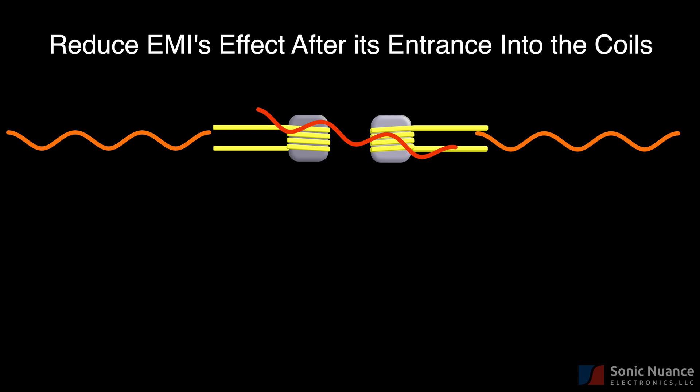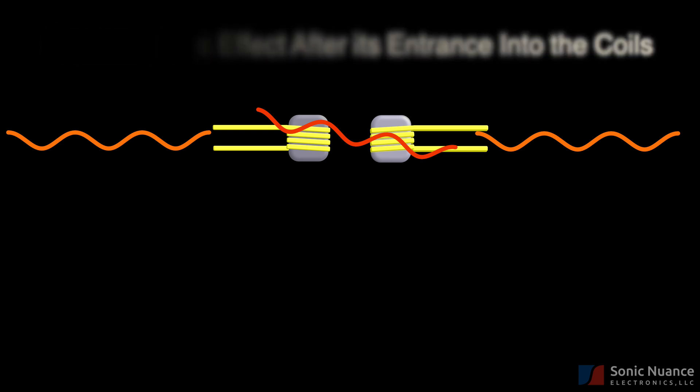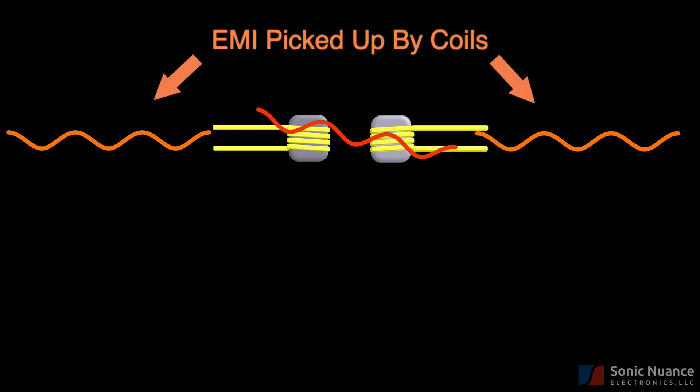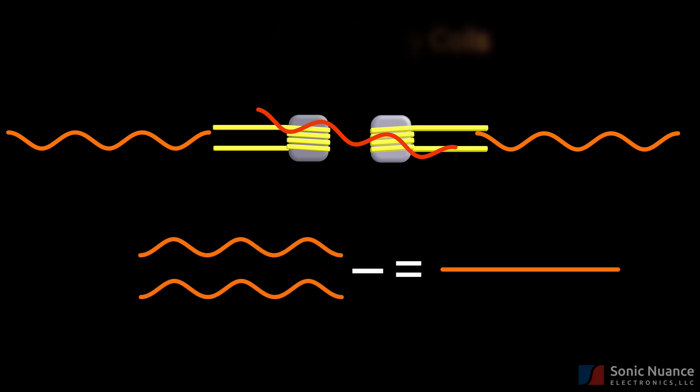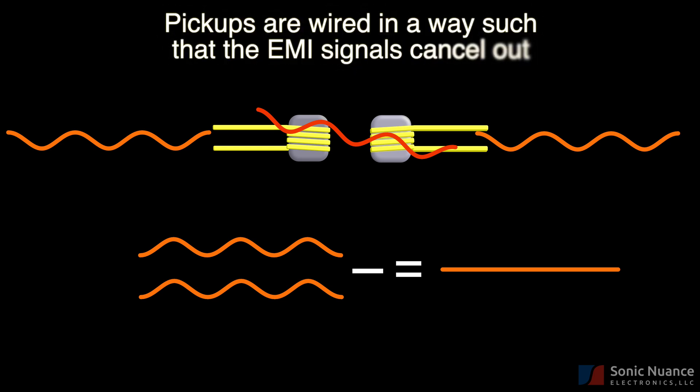To explain how they work, we have our two single coil pickups here. Seen from the diagram, since we have a copy of this EMI signal in the second pickup, we can subtract it from the other pickup's EMI signal. There are various ways to do the subtraction, but one of the simplest ways is to connect the two pickups in series.